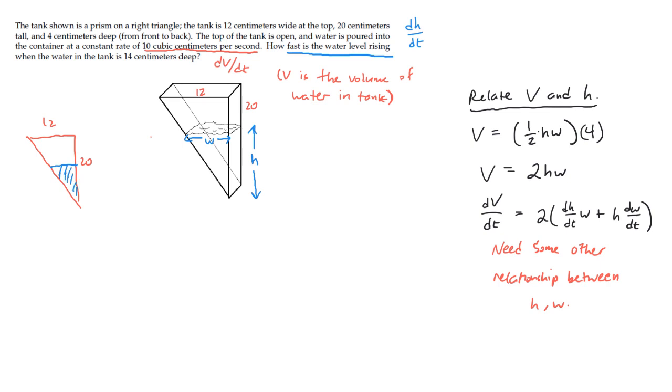And that's because these two triangles, the red one and the blue one, are similar. Because they are similar, that means that the ratio of 12 to 20 is going to equal the ratio of w to h. And therefore, we can create a relationship directly between h and w, and then use that to help us solve the problem.